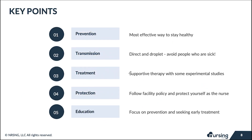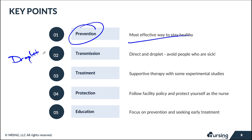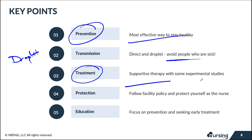To recap: first, prevention is the most effective way to stay healthy. Second, droplet transmission is the most common transmission method — avoid sick people and wash hands frequently. Third, treatment is supportive therapy for confirmed cases. Experimental antiretrovirals are beginning to be introduced, but we don't yet have enough data to determine how effective they are.